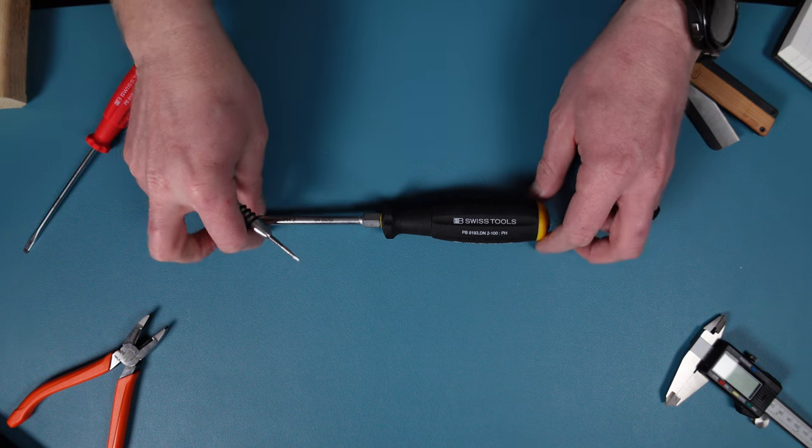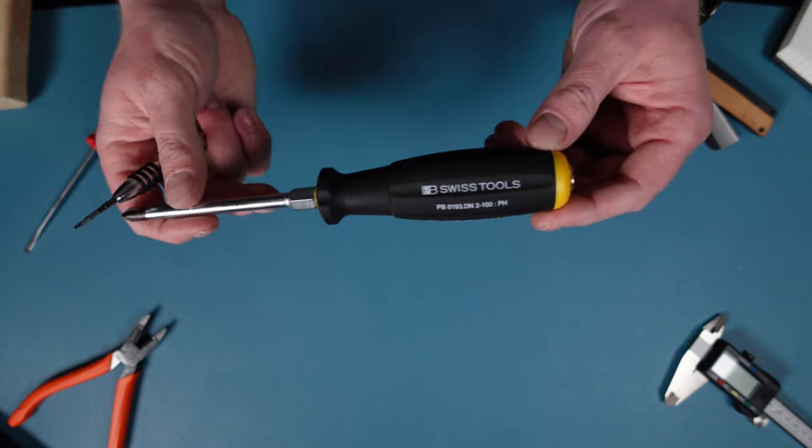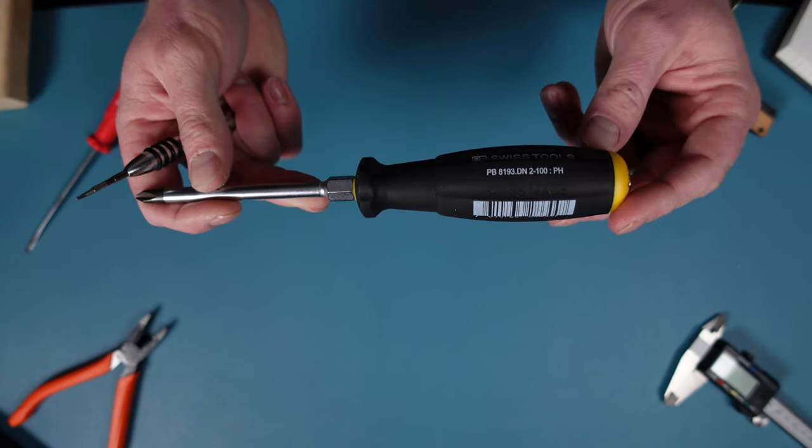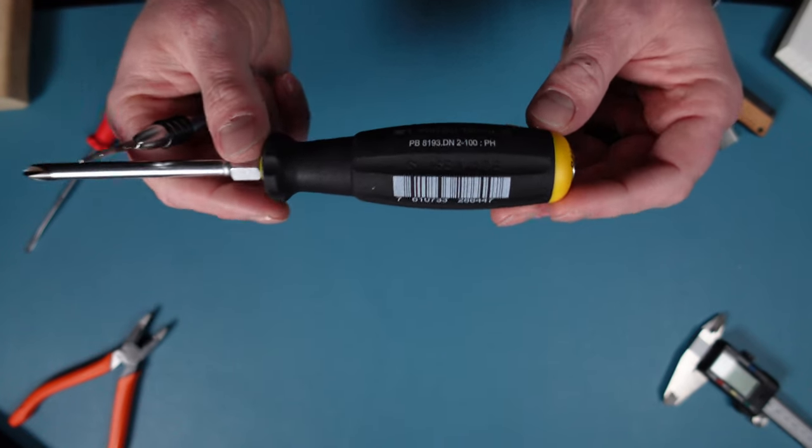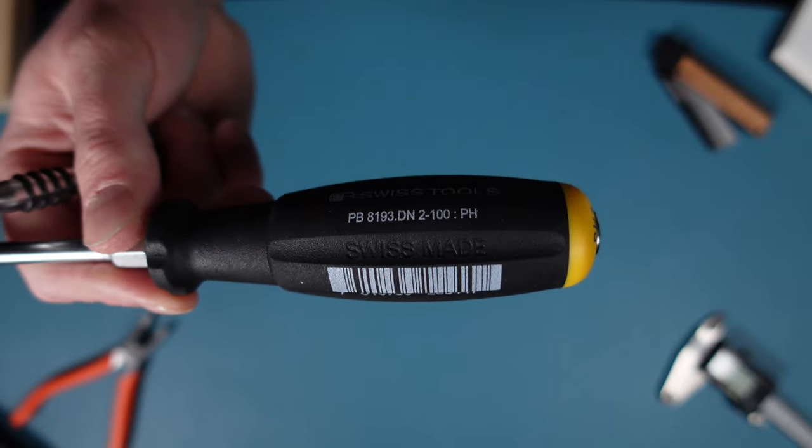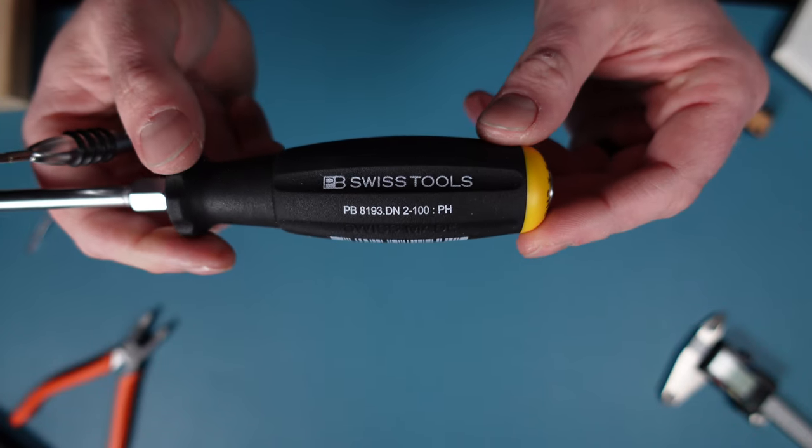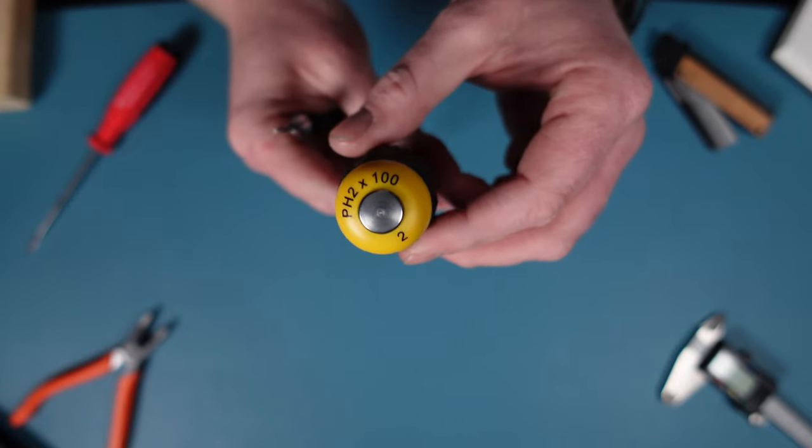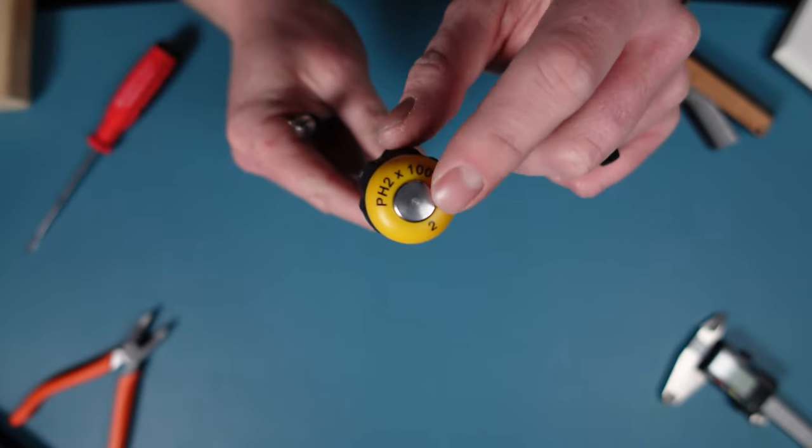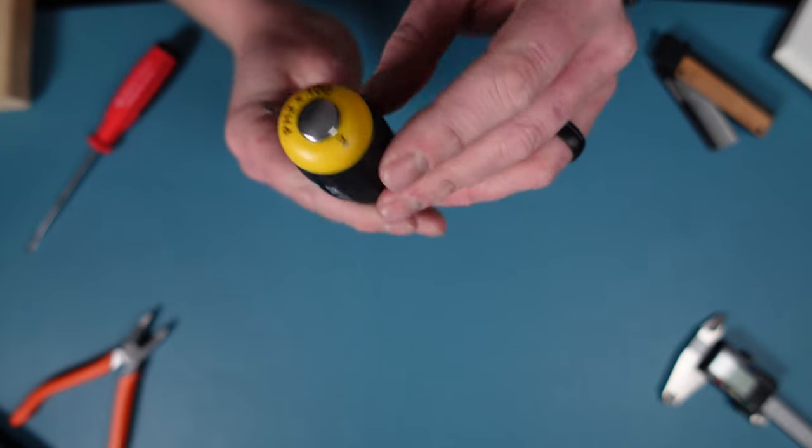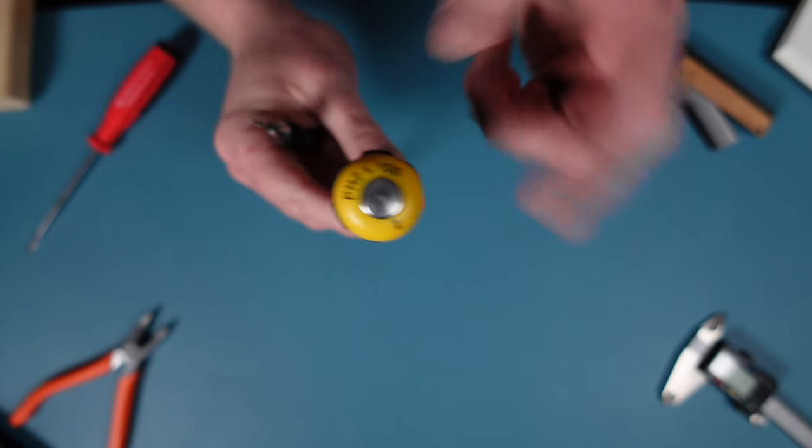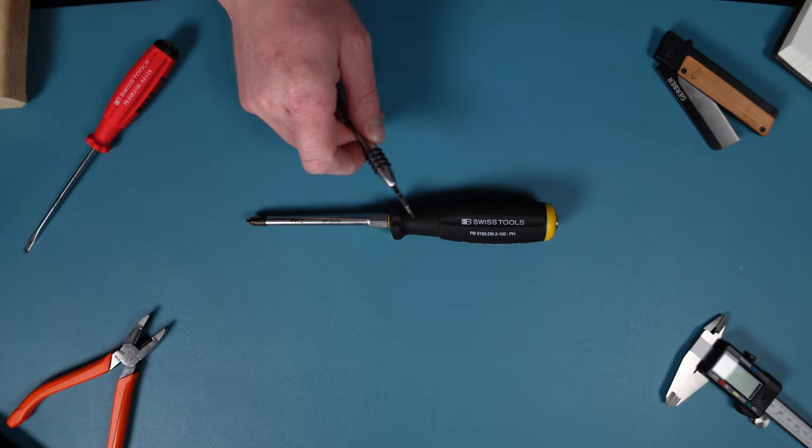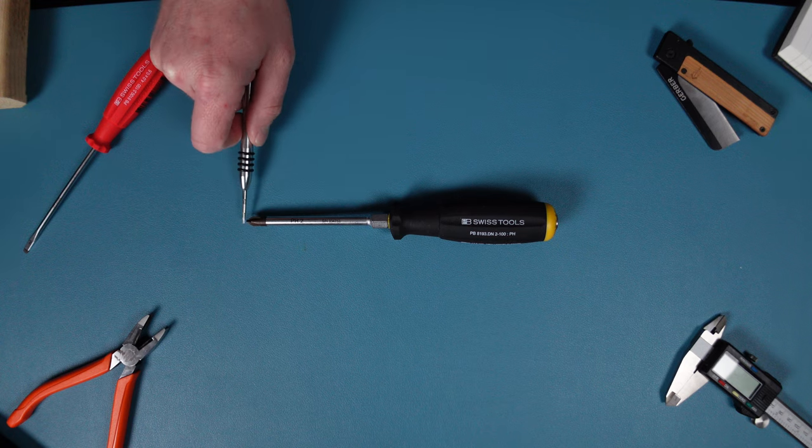So getting into this screwdriver we're looking at the once again PB Swiss heavy duty made in Switzerland. On here you can see Swiss made then it has the part number Swiss tool PB Swiss tools and the barcode and then on the top side you're going to have a yellow plastic cap with a striking cap and it's going to say Phillips head number two by 100 that's what we have. 100 is your four inch blade.